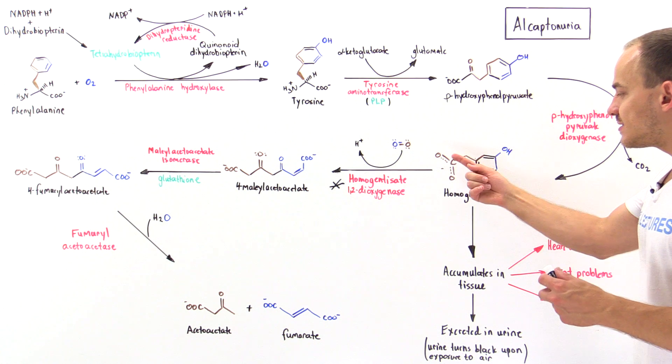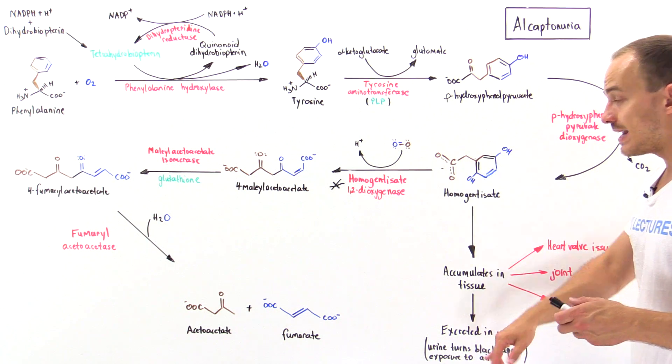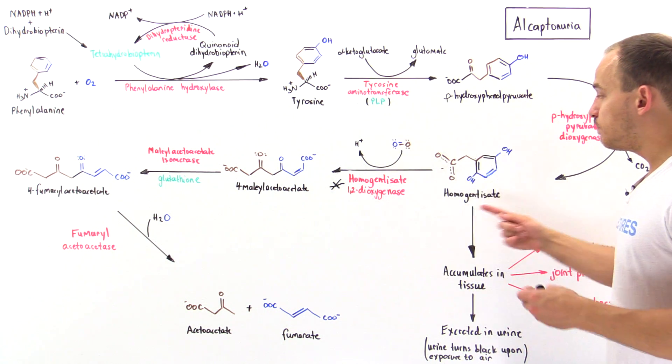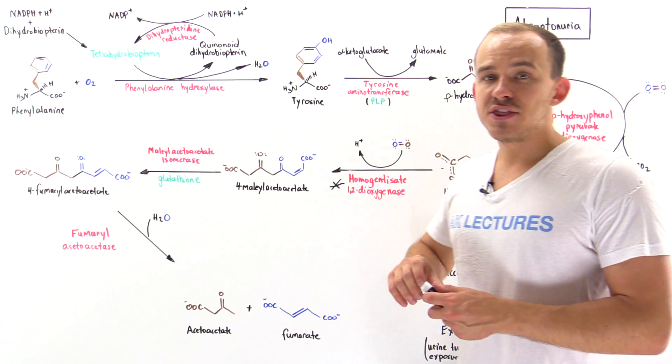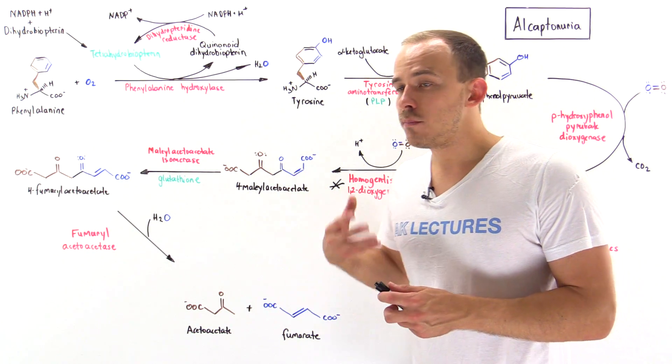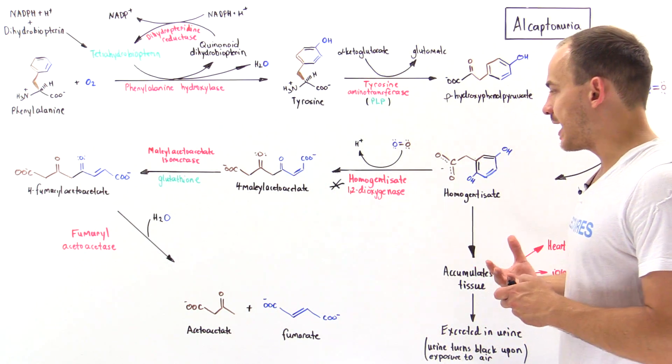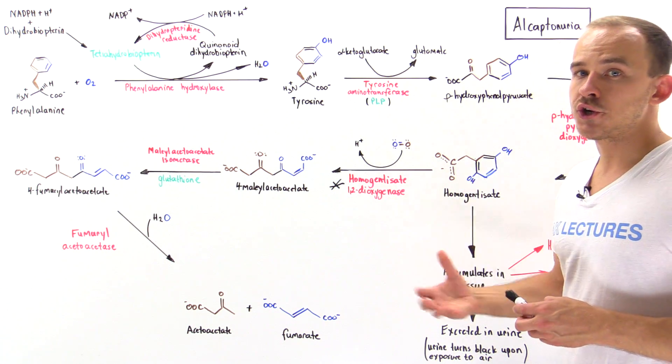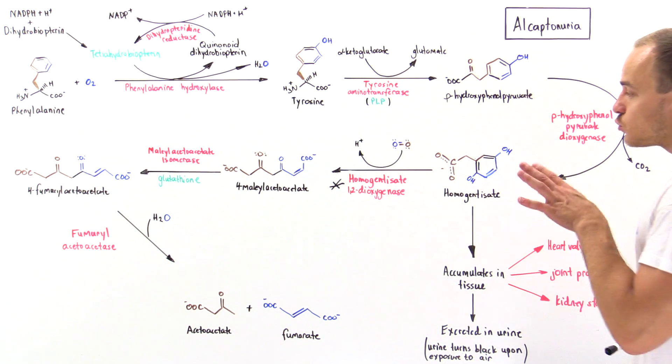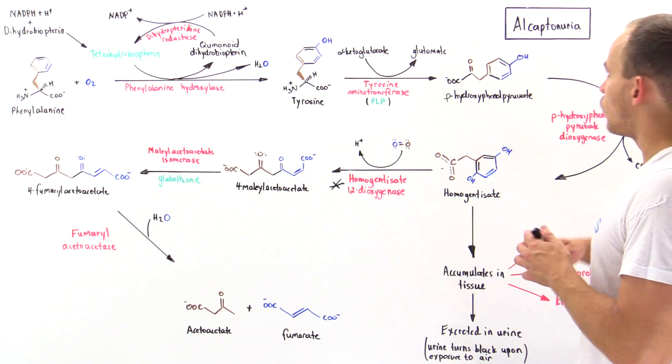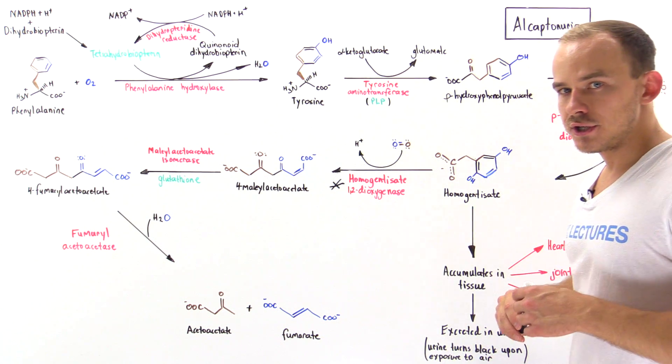When the homogentisate is found in the urine and exposed to air, it will begin to polymerize and that polymer product will cause a color change of the urine. The urine will turn black. That's one clinical manifestation of individuals who have alcaptanuria.